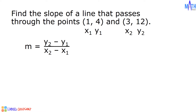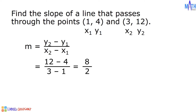Let us substitute the given values to the formula. m is equal to y2 minus y1 over x2 minus x1, which is 12 minus 4, over 3 minus 1. Let us simplify: 12 minus 4 is equal to 8, over 3 minus 1 is equal to 2. 8 divided by 2 is equal to 4. It means that 4 is the slope of a line that passes through the points (1, 4) and (3, 12).